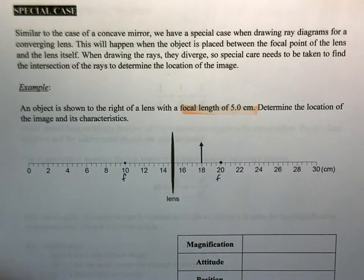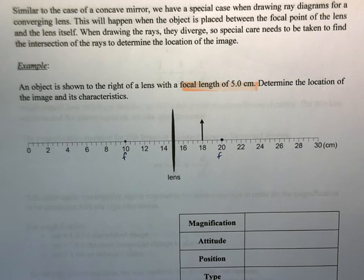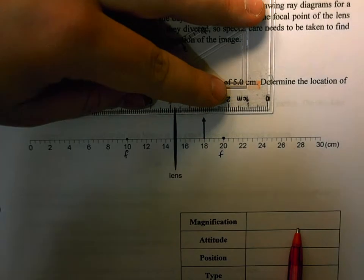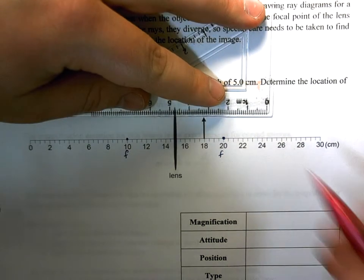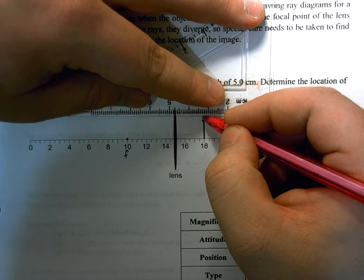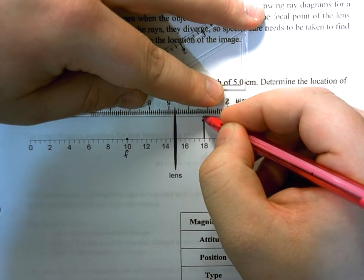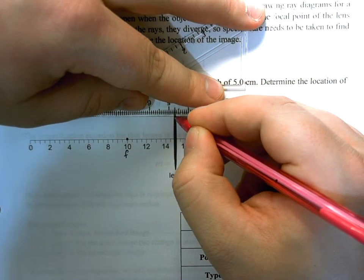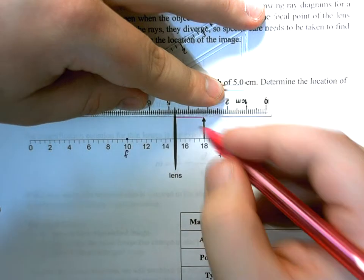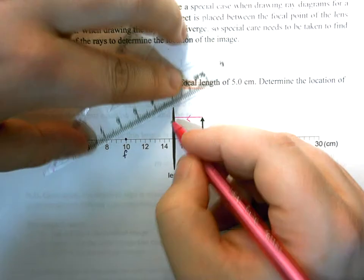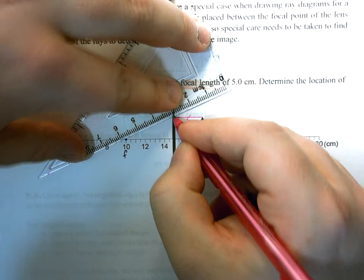This is a converging lens. We can easily draw two rays. Let's start with the easy ones. Let's start with the first ray - we're going to draw it parallel to the principal axis. It's a little hard to draw without the grids, so we're going to try and make it as parallel as possible. Now once it gets to the center of the lens, we'd like to refract that such that it's passing through that focal point.